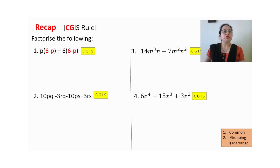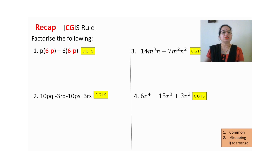The first question is a recap of the C, G, I, S rule. C is for common, G is for grouping. We will use these two first and then start with I. As soon as you read factorization, you need to remember the C, G, I, S rule.